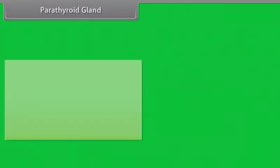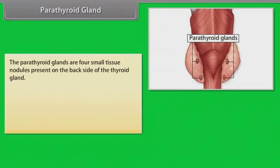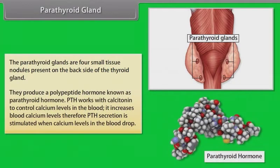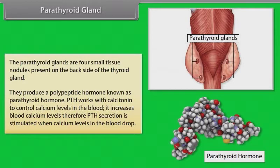The parathyroid glands are four small tissue nodules present on the backside of the thyroid gland. They produce a polypeptide hormone known as parathyroid hormone (PTH). PTH works with calcitonin to control calcium levels in the blood; it increases blood calcium level. Therefore, PTH secretion is stimulated when calcium levels in the blood drop.